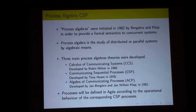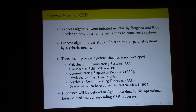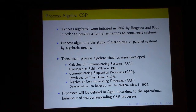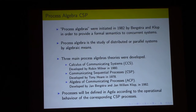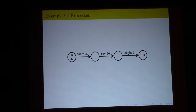Process algebra was initiated in 1982 by Bergstra and Klop to provide a formal semantics to concurrent systems. Process algebras have three main notations: CCS, developed by Robert Milner in 1980; CSP, developed by Hoare in 1978; and ACP, developed by Klop and Bergstra. In our representation, we follow the operational behavior of the corresponding CSP processes.